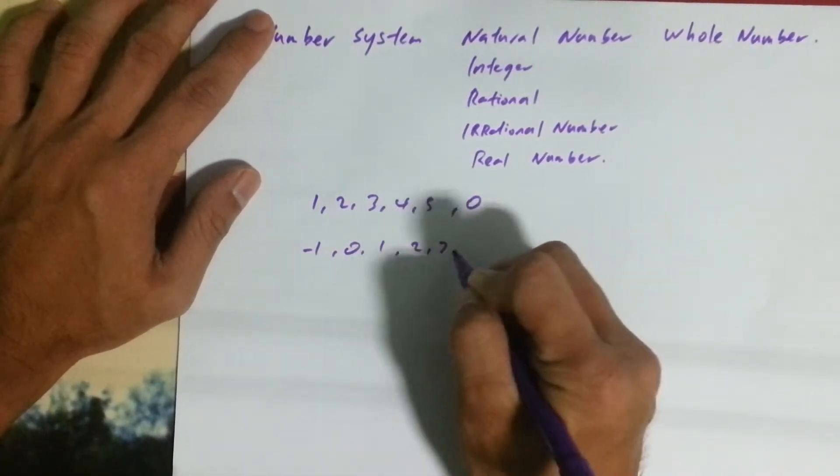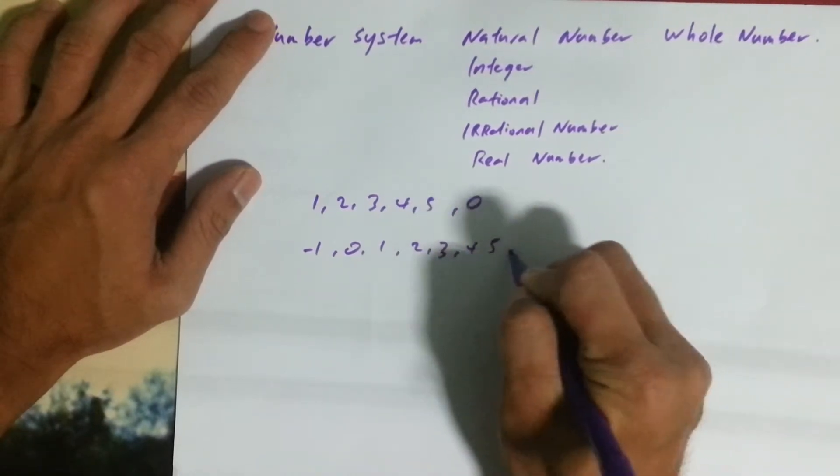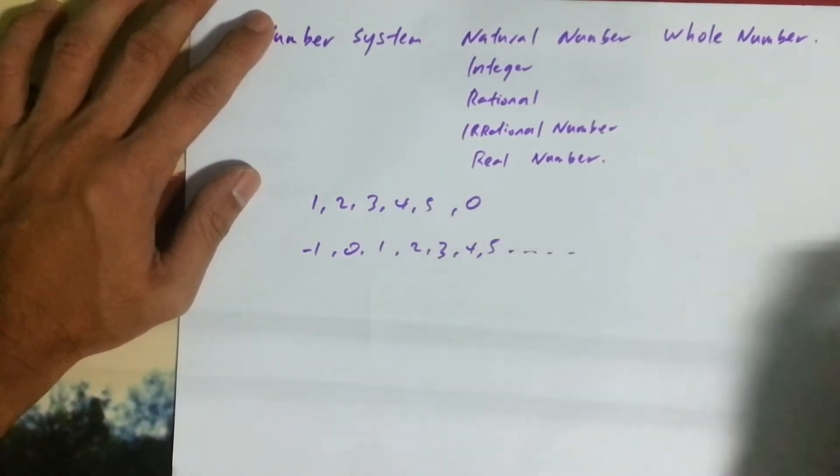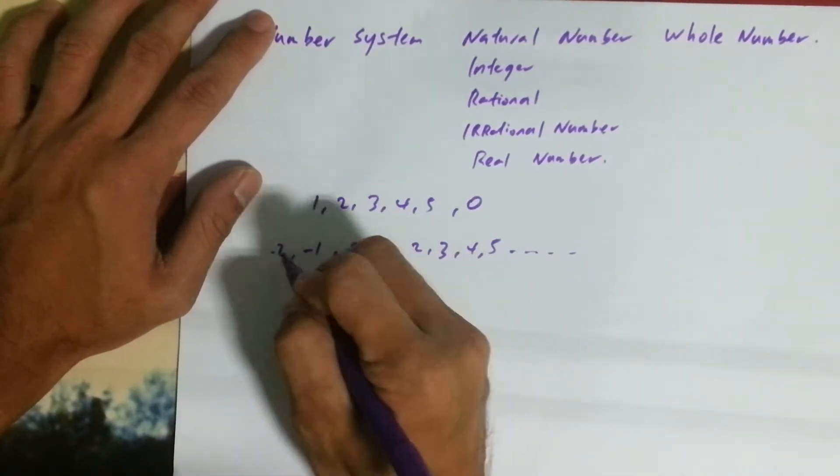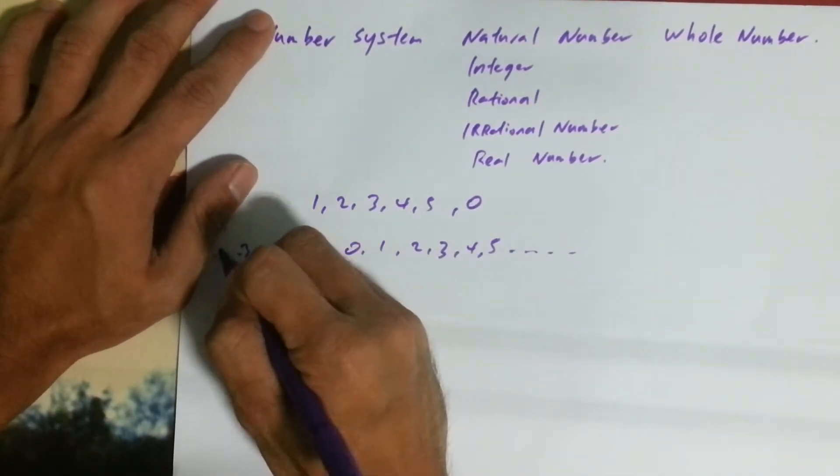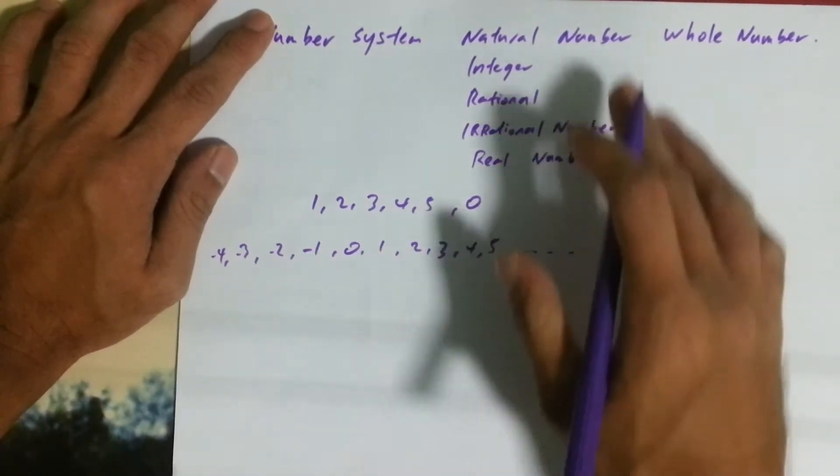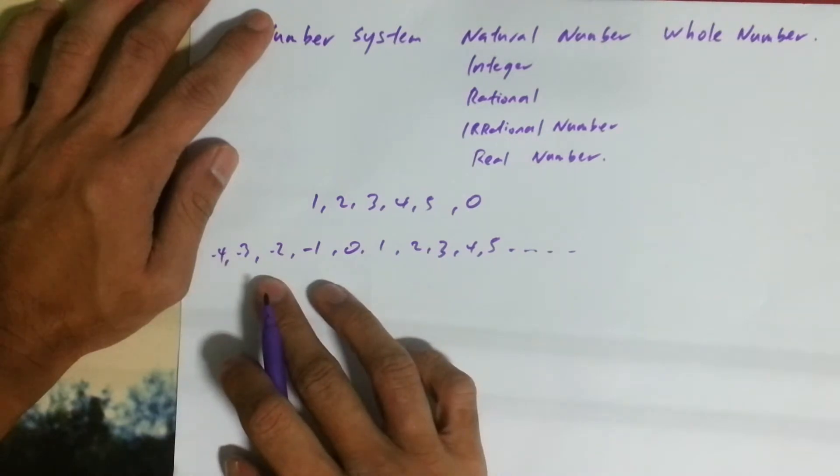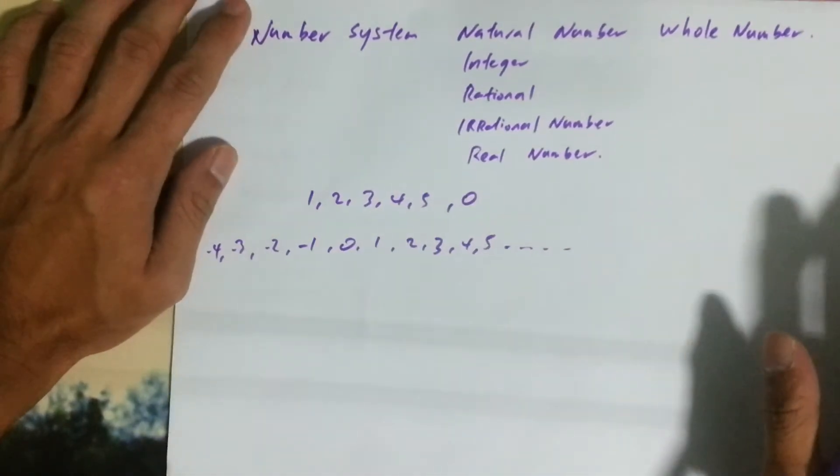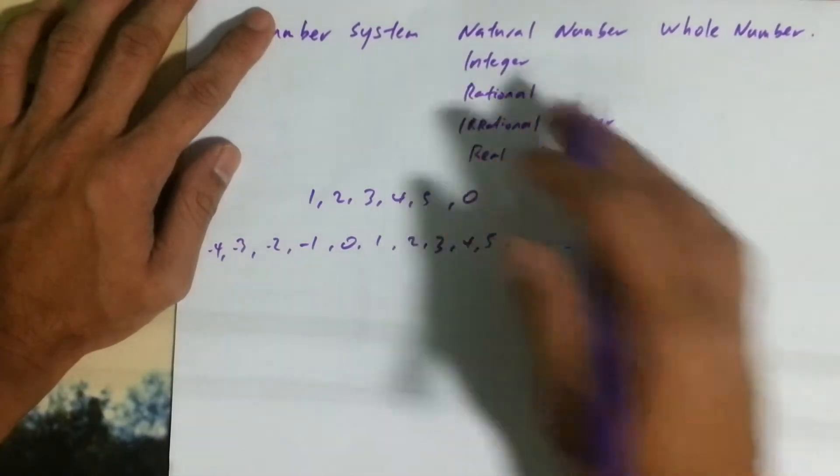Two, three, four, five, all the way to infinity, so minus two... The difference between natural numbers and integer numbers is the negative sign, just that. It's very simple.